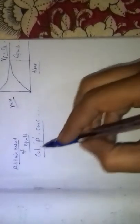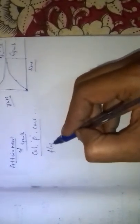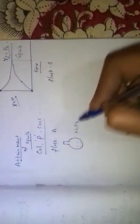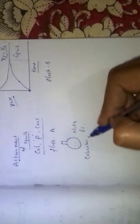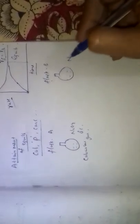This can be studied using an experiment. Consider two flasks, flask A and flask B. In flask A, N2O4 is taken at 0 degrees centigrade — it is a colorless gas. In flask B, nitrogen dioxide, NO2, is taken at 100 degrees centigrade — it is a reddish-brown gas.